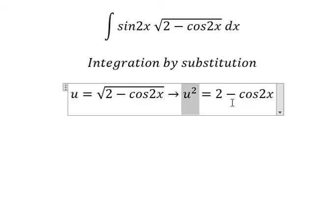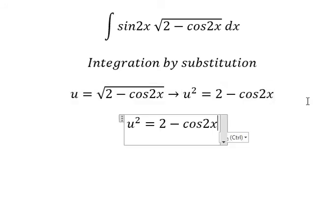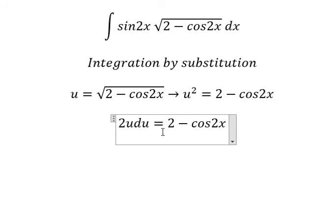Next we do first derivative for both sides. So you get 2u du and this one you get 2 sin 2x dx. Because we don't have number 2 in here, so we divide both sides with number 2.